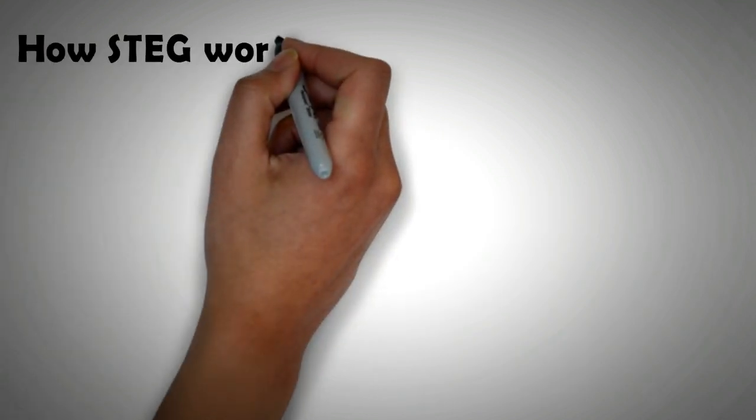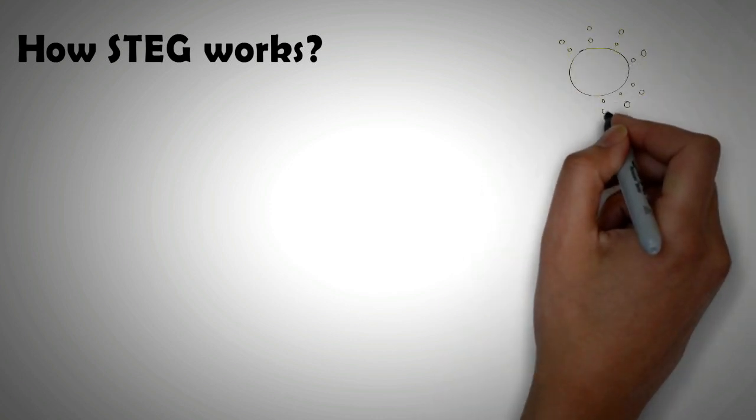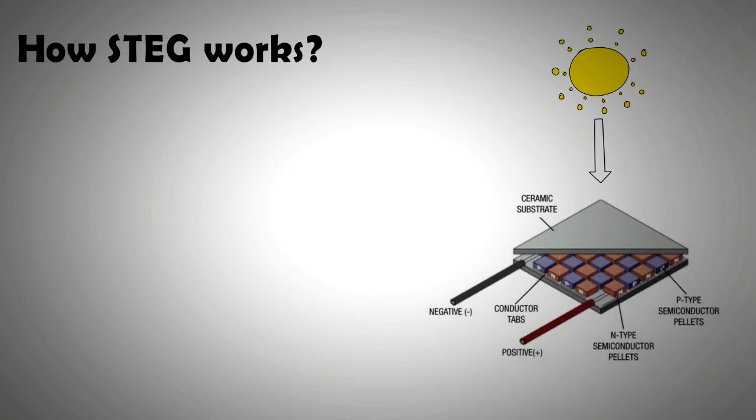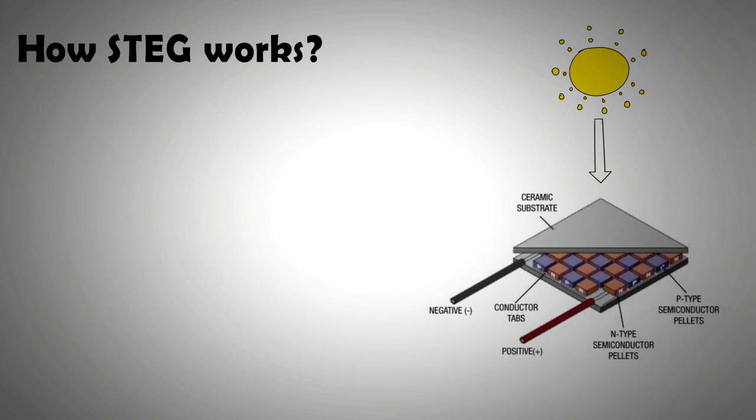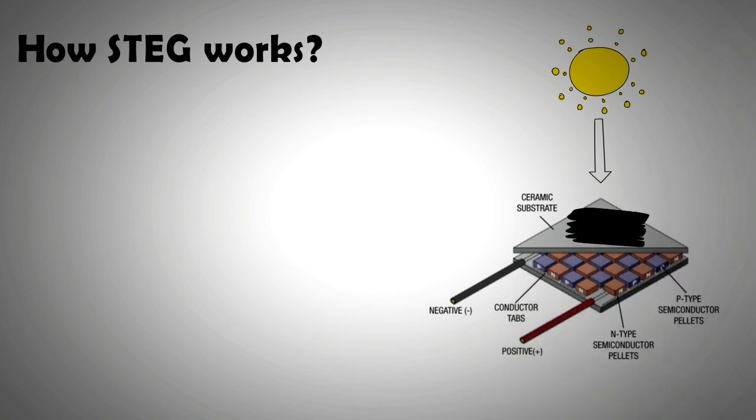So let's have a look at how STEG works. Solar thermoelectric generators are made up of two metal absorber plates that sandwich semiconductor material between them. Ceramic plates can also be used instead of metal. The hot side metal plate at the top is additionally coated with selective material that enhances absorptivity. Nickel-plated copper can be used as an absorbing surface. The cooler side is exposed to ambient air.